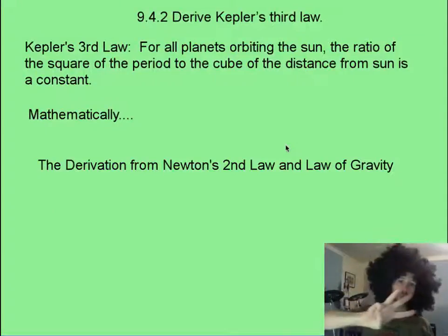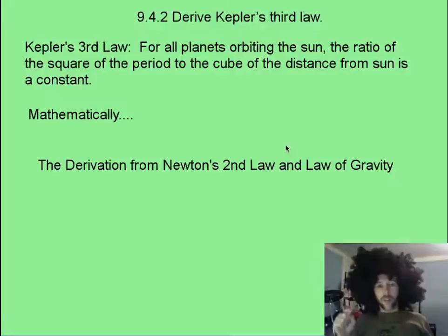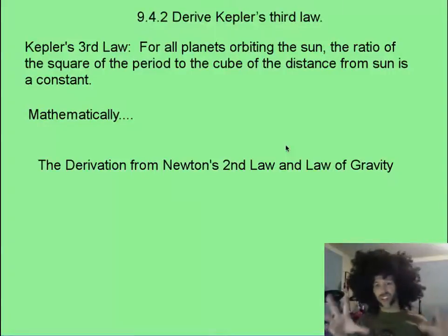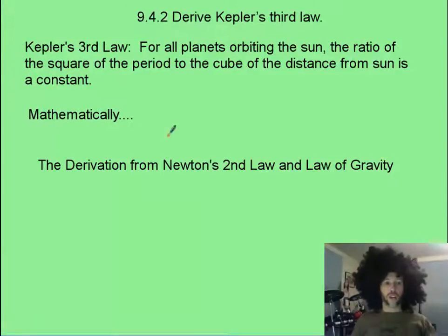We're going to derive Kepler's third law. Kepler, in the years pre-Isaac Newton, before they knew anything about the universal law of gravity, Kepler worked for Tycho Brahe. Tycho Brahe was an astronomer who had no nose. He wore, like, a brass, gold, silverish metal nose in public. But he made lots of observations.